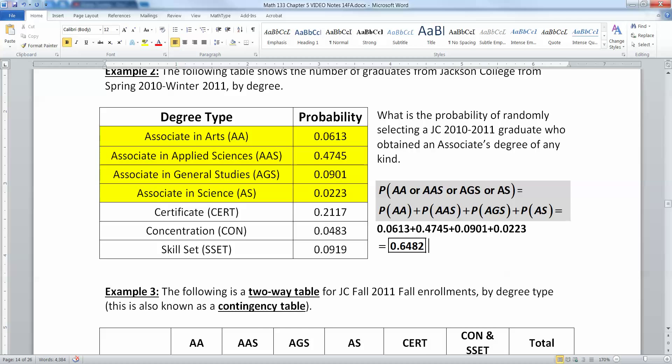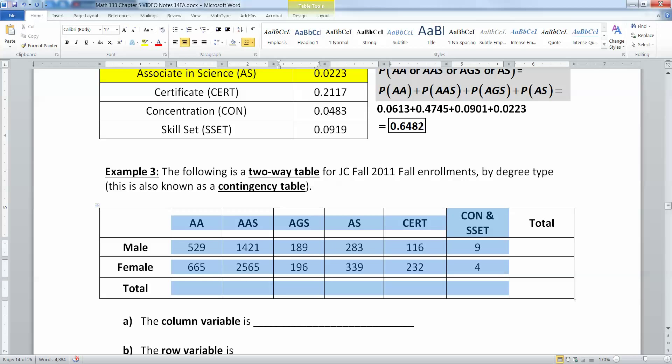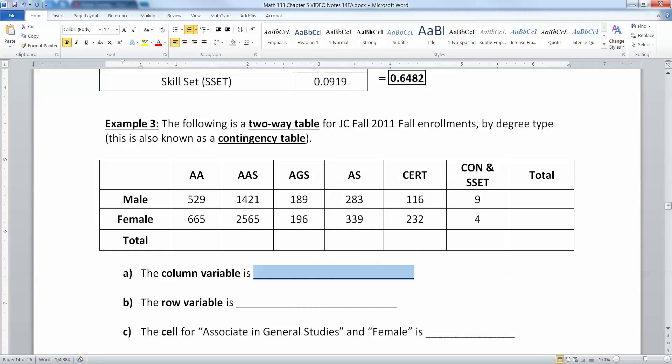Now we're going to look at something called a two-way table. This is also known as a contingency table. It's two-way because you have two directions. You have the columns right here, which are those different degrees and certificates, and then you have the rows right here, which are the genders. So you have two directions, rows and columns, and that's what makes it a two-way table. The column variable is degree type, it's mentioned right up here. And the row is gender: male, female.